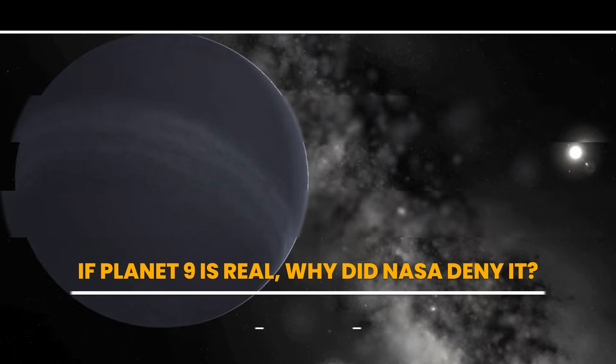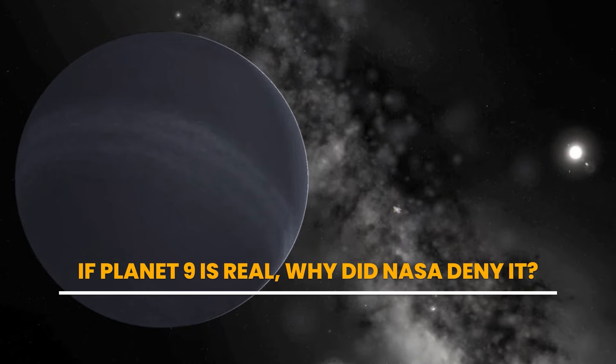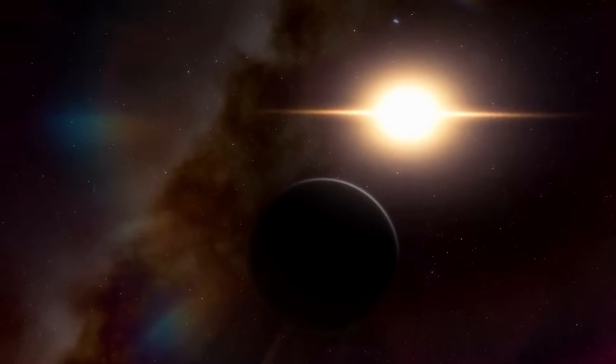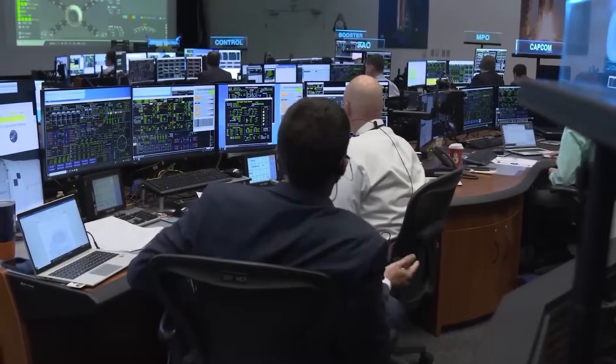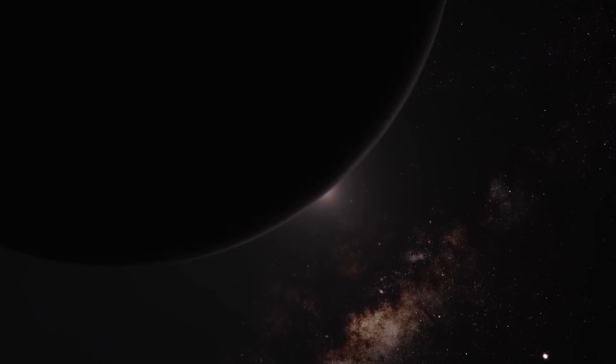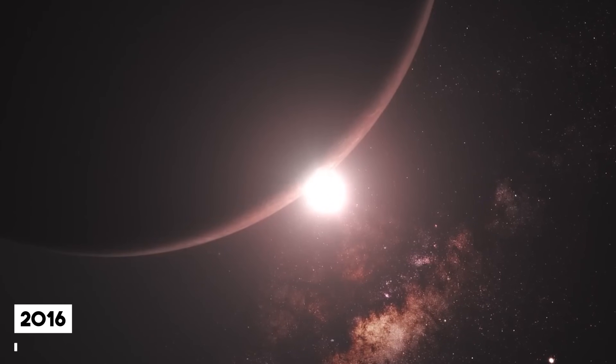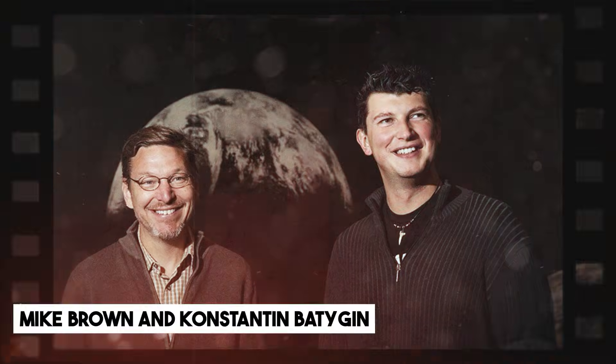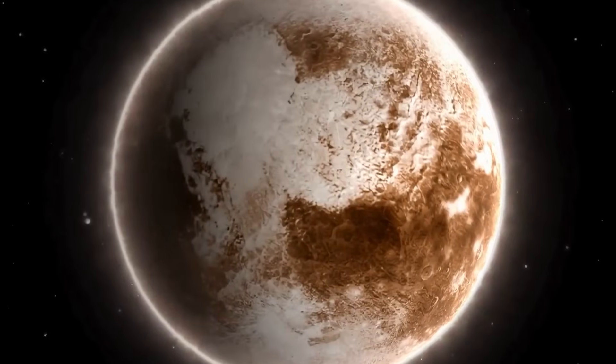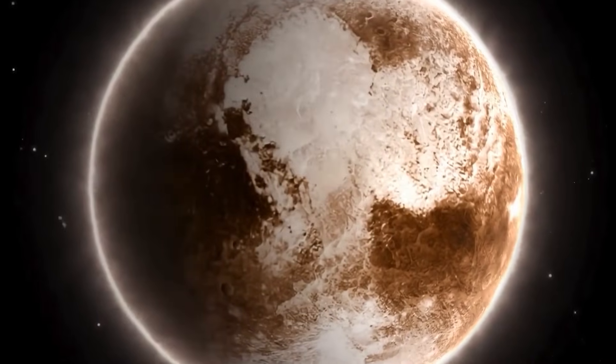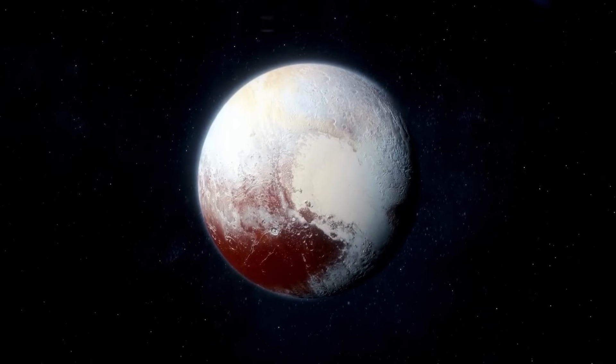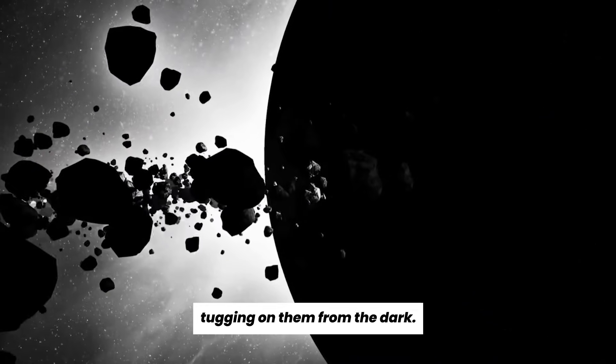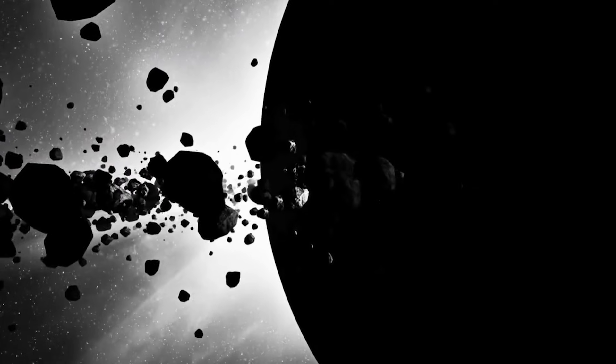NASA had already archived and moved on from this data. But Lin's team found what others missed. And because they published through a CERN-hosted archive, the internet exploded with the wrong idea. We didn't find a planet, Lin said. We found a question worth asking. If Planet 9 is real, why did NASA deny it?